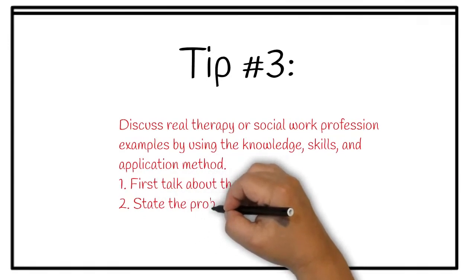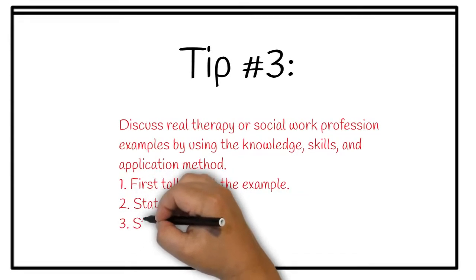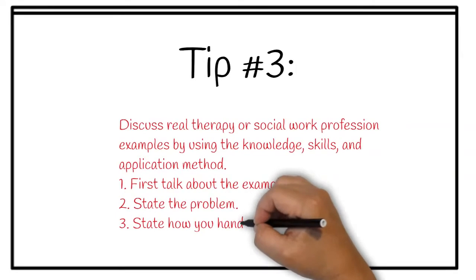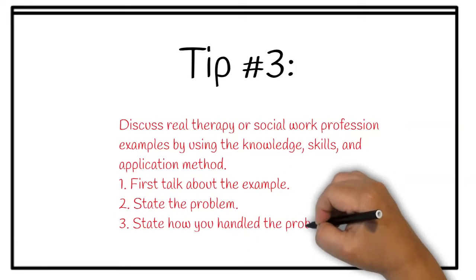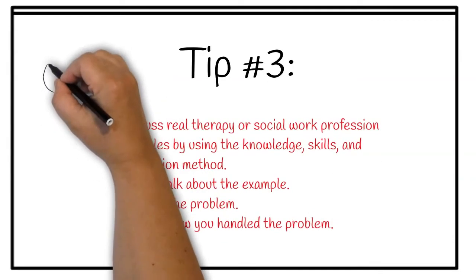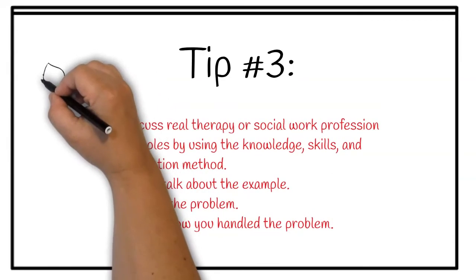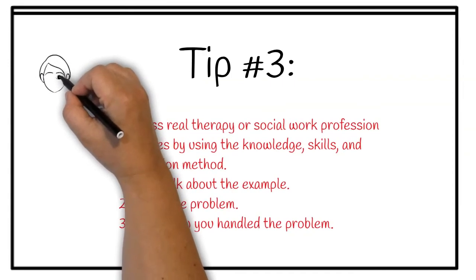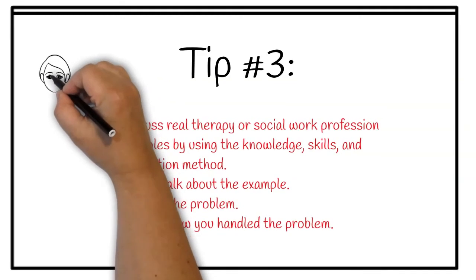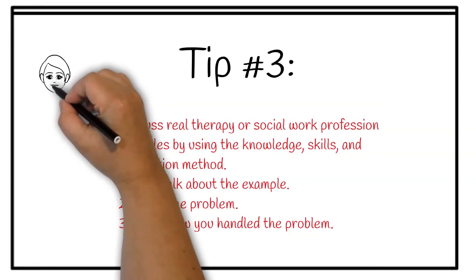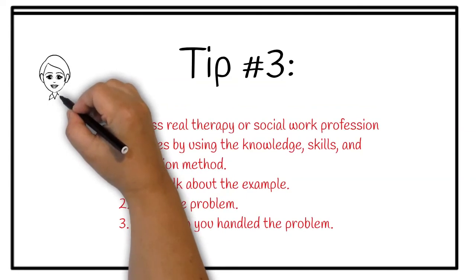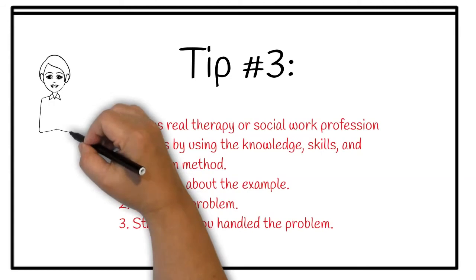The first part—step one of the knowledge, skills, and application method—was me telling the story about the client and providing a case presentation on their diagnoses. The second part was stating the problem. This was a really silly example because I don't want to give a real example, but I stated the problem about the client not wanting to engage or talk to me. And thirdly, I provided my intervention on how I handled that problem. I pointed it out, had direct communication with the client, and provided an alternate session environment—we met outside and the client was able to start opening up.